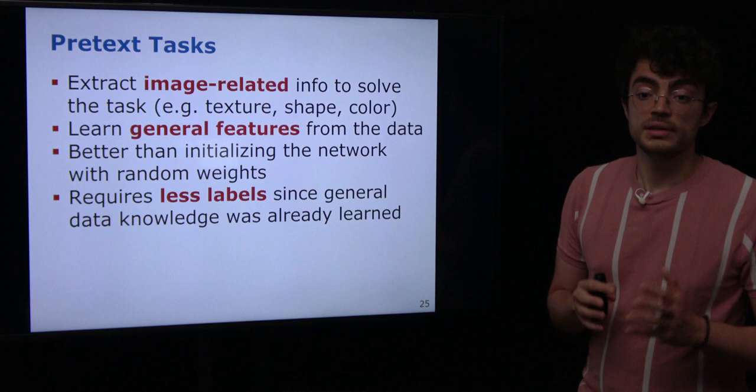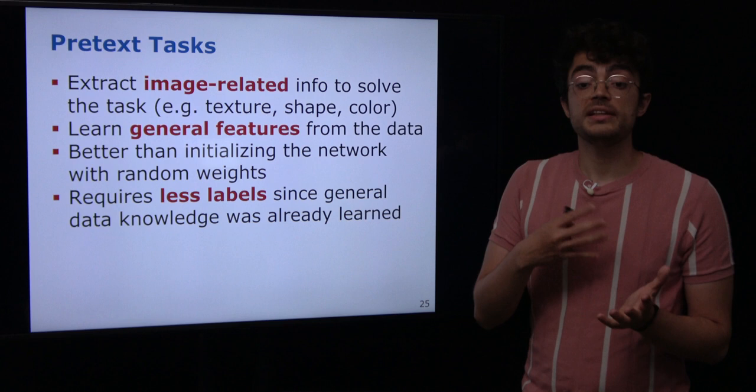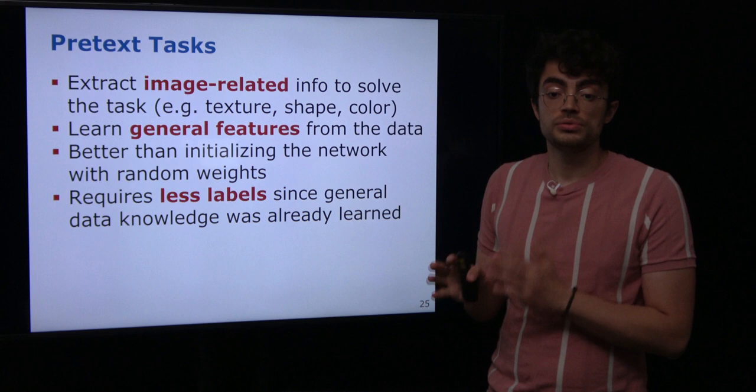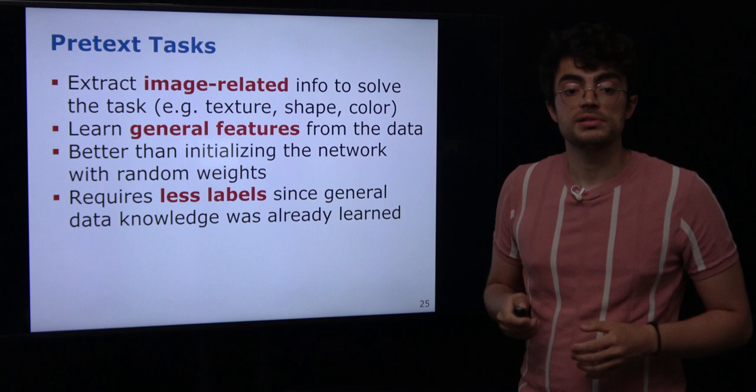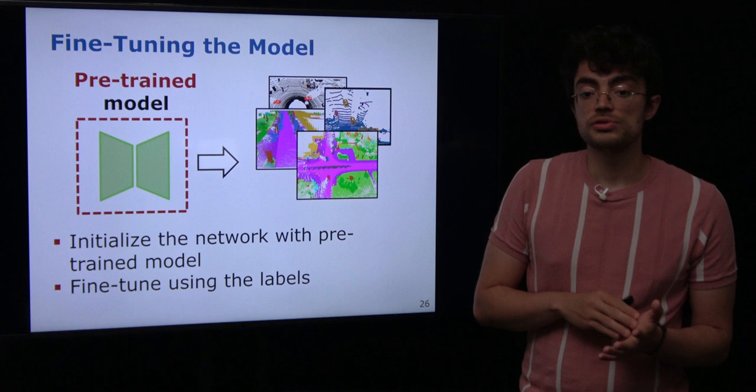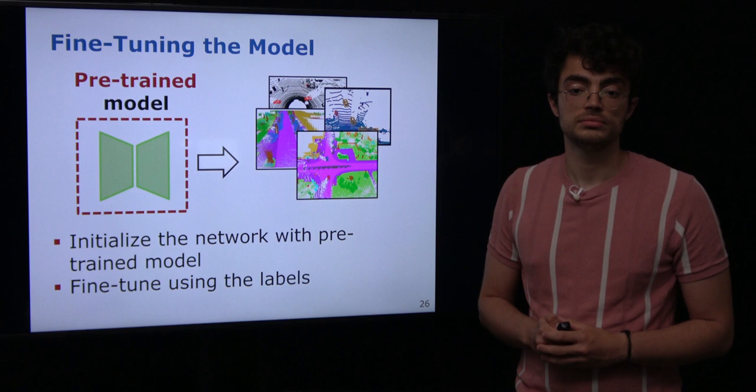In summary, the goal of these pretext tasks is to define a task where we can generate labels online, but still require the model to learn useful features such as texture, shape, and color. This way we can use this pre-trained model to fine-tune to the target task, which would hopefully require fewer labels to achieve high performance. After this pre-training, we can save the pre-trained model and use it on different tasks by fine-tuning to the target task using the corresponding labels.